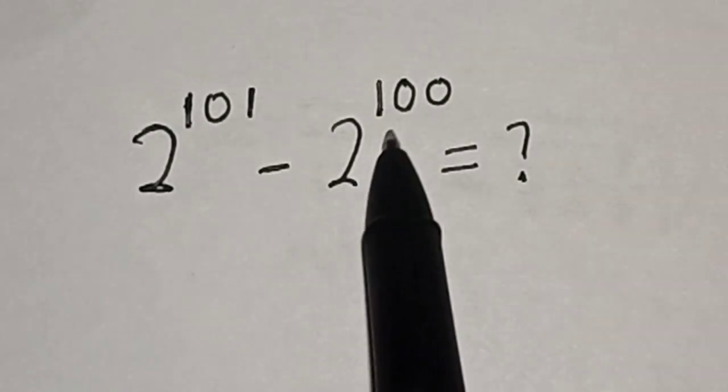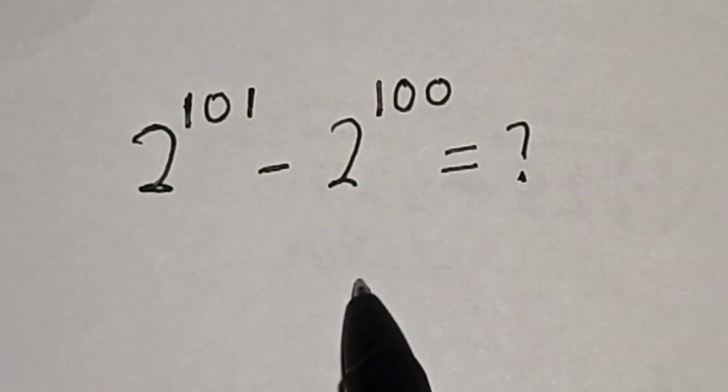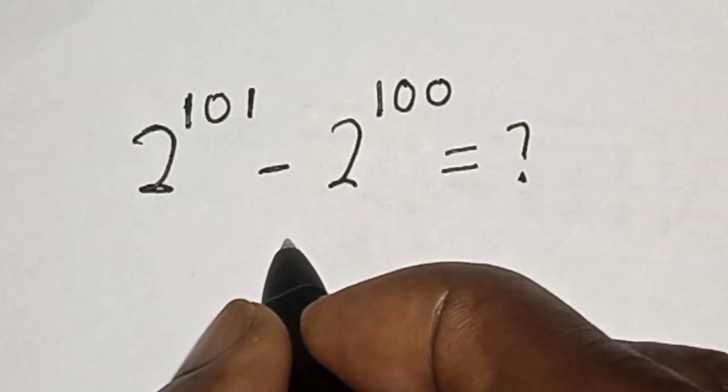2 raised to power 101 minus 2 raised to power 100 is equal to what? Like, share, comment, and subscribe. Solution: